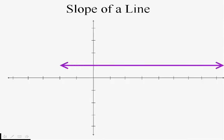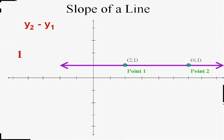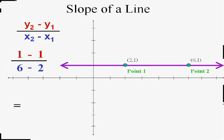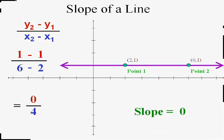It would even work for a flat line, but I bet you already know the answer. Let's pick points six-one and two-one and put them into the formula — pretend we didn't see the picture. y2 minus y1 is one minus one, and x2 minus x1 is six minus two. One minus one is zero over four. You already knew the answer looking at the picture was zero because it's a flat line.